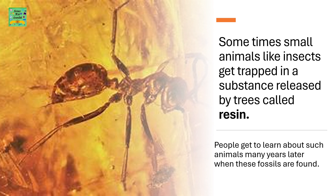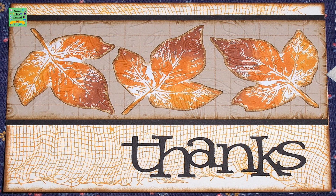Sometimes small animals like insects get trapped in a substance released by trees called resin. Some people get to learn about such animals many years later when these fossils are found.